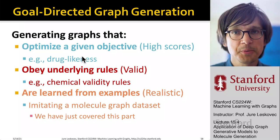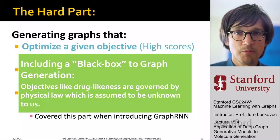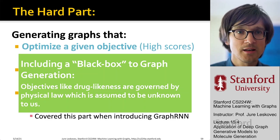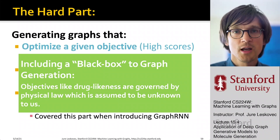The important point is that the criteria is really a black box. It's a black box where the graph generation will get some feedback. The objectives like drug likeness are governed by physical laws, which we will assume are unknown to us. What I mean is we don't need them to be written down. All we have to do is have a black box — if we give it a molecule, the black box tells us how good that molecule is. But we don't have to look into the box.